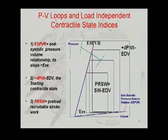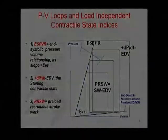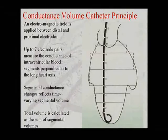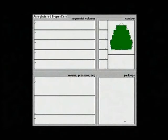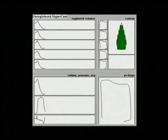PV loop allows us to evaluate load-independent contractile state indices. Seven segmental volume slices perpendicular to the left ventricle long axis are shown. In the top left panel, segmental volumes are represented. The bottom left panel shows a volume curve, a pressure curve, and the ECG recording.